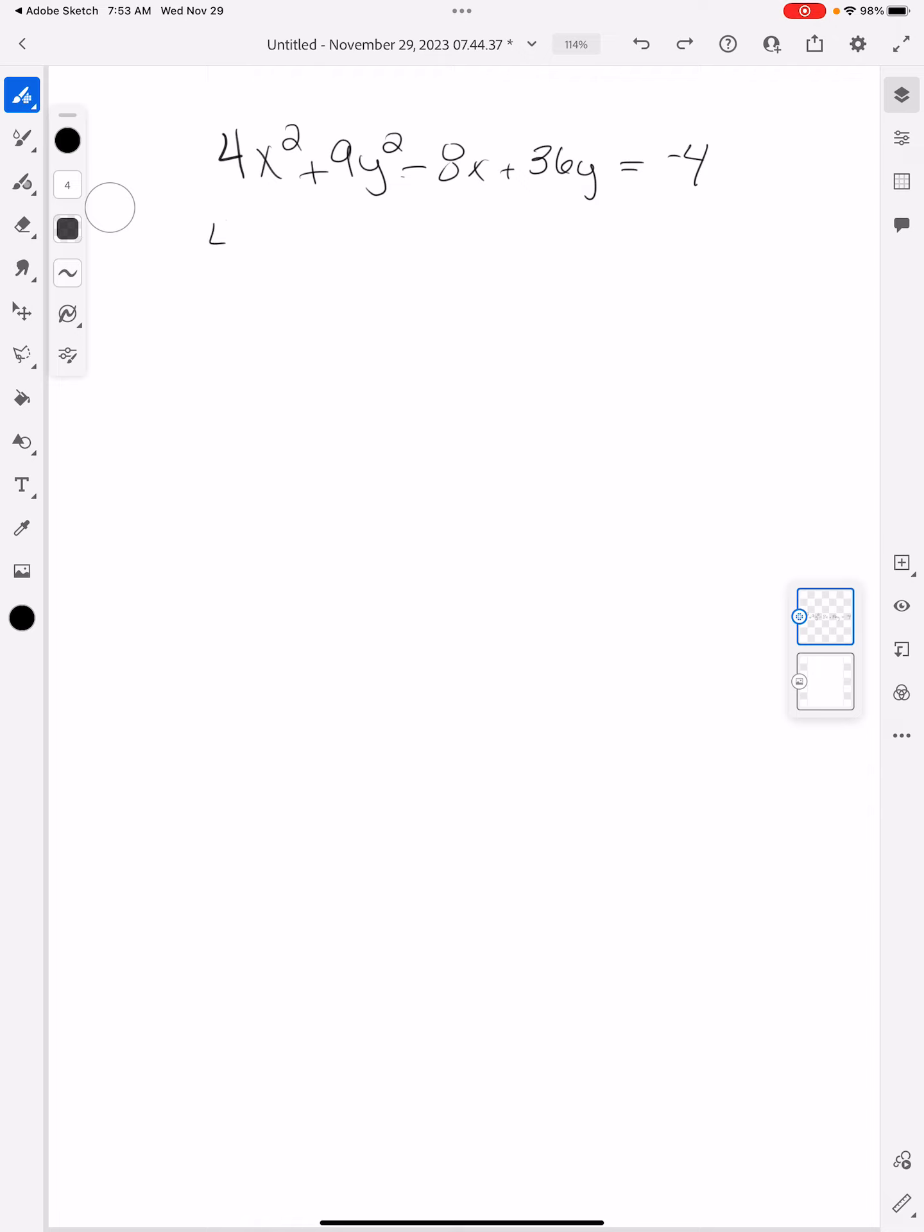So I want to have my 4x squared, just like before, minus 8x with that blank piece there. And then I'm going to have my 9y squared and my 36y and my blank. Now, what's different here is that I have numbers in front of the parentheses, in front of the squared term.